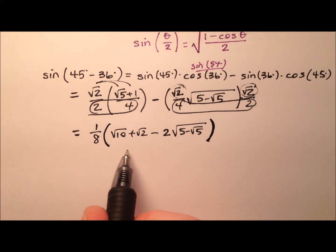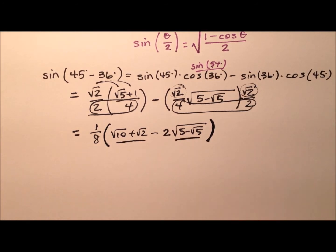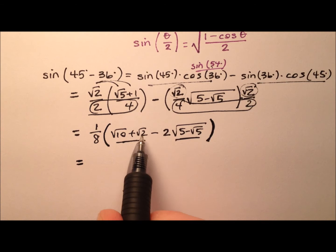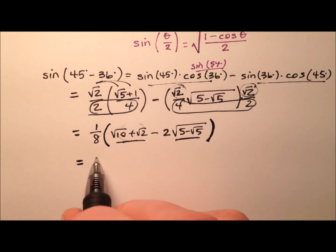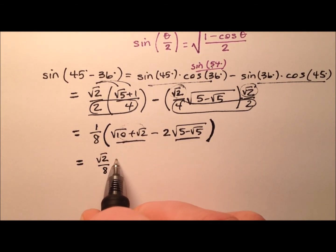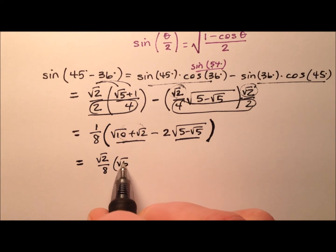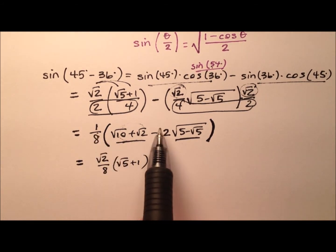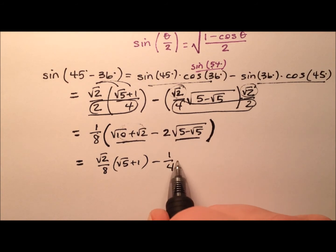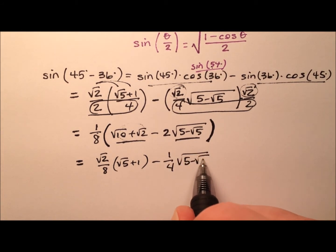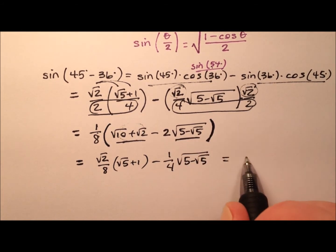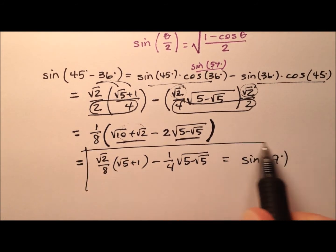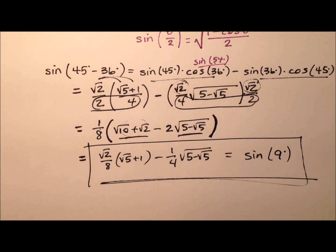There are other ways to write this. If you want to keep these a little more separate, you could factor out a square root of 2. You could say the square root of 2 over 8, and then multiply that by the square root of 5 plus 1. And then minus, this 1/8 times 2 is 1/4 times that radical expression. So here is one expression for the sine of 9 degrees.